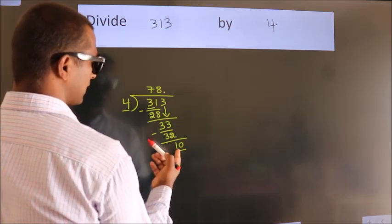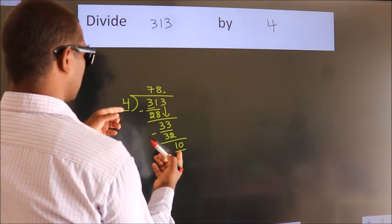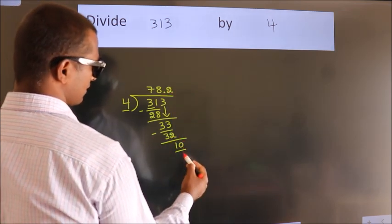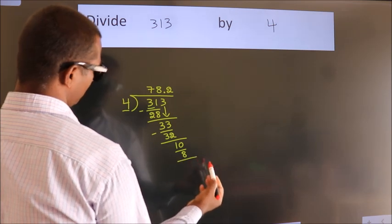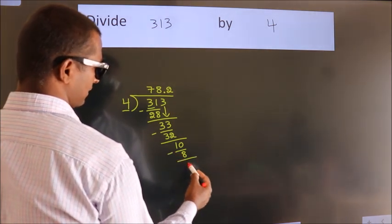A number close to 10 in 4 table is 4 2's 8. Now we subtract. We get 2.